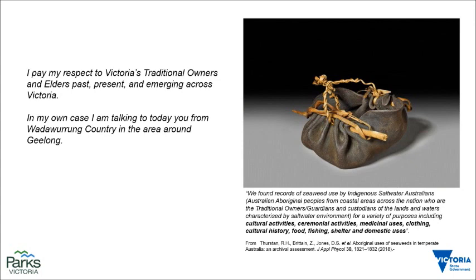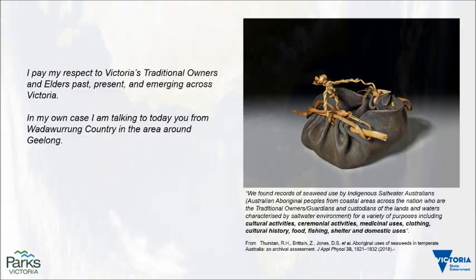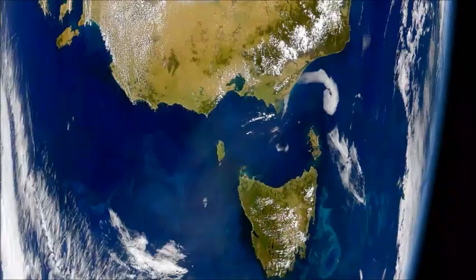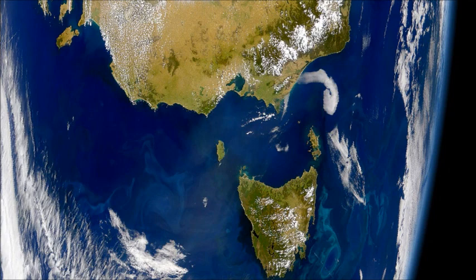Bull kelp grows all the way down through to the subantarctic islands — it's very much a cool-water marine plant, and one we'll come back to later. For those less familiar with Victoria's marine environment, we have this fantastic view of Victoria as seen from space. We can see this southward-facing coastline stretching from the Pacific Ocean in the east, past Mallacoota, all the way through to Discovery Bay in the western part of Victoria. You can also see the large embayments like Port Phillip, some of Western Port, and a bit of Corner Inlet.